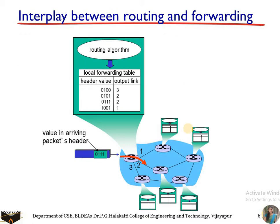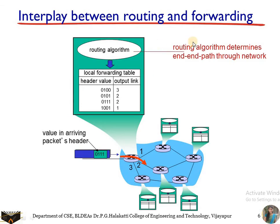There is a routing table, also called a forwarding table. The forwarding table is determined based on the routing algorithm. The routing algorithm determines the end-to-end path through the network. Each router has its own local forwarding table. For example, if a router receives a packet with a header value of 0100, it will be sent through output link 3. Now consider a packet received with header value 0111 — the router looks into its routing or forwarding table, finds 0111, and sends the packet to output link 2.